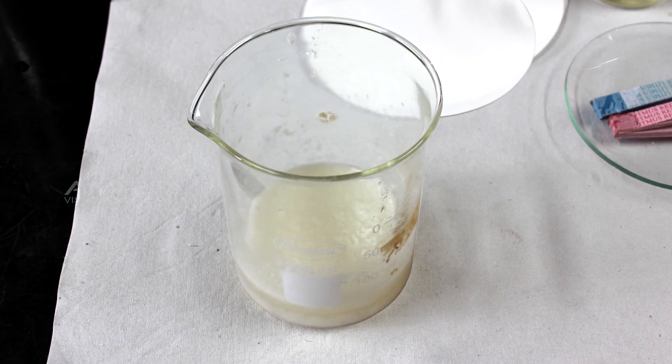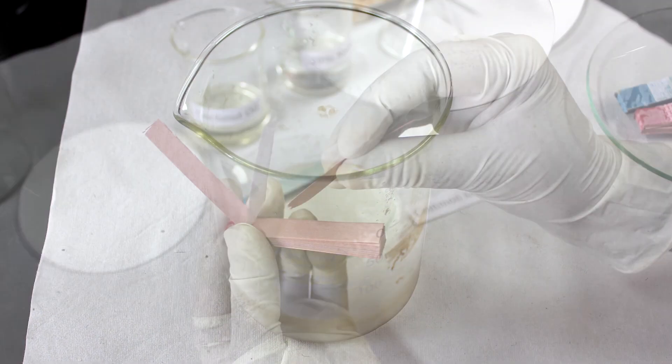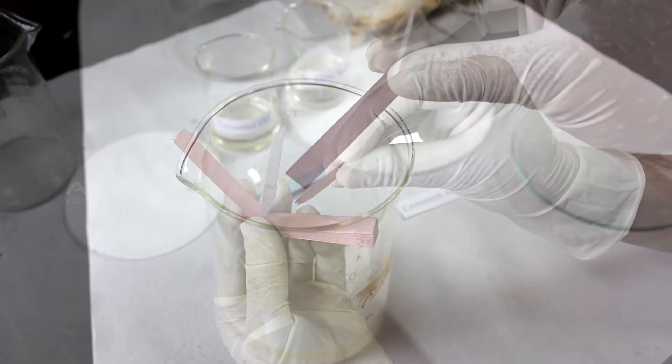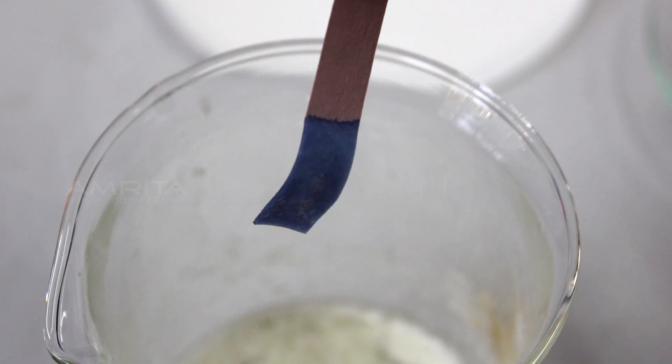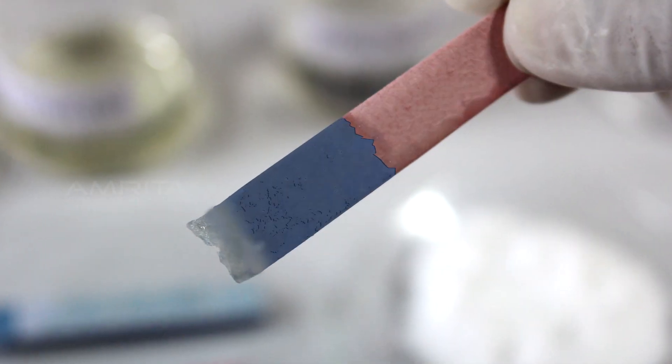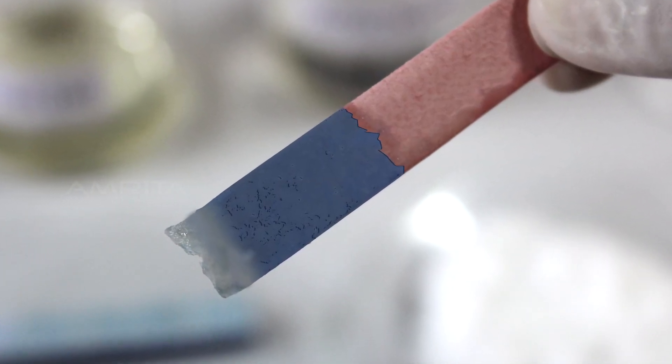Remove the beaker from the flame and allow it to cool. Take a red litmus paper and dip it in the suspension formed. Red litmus paper changes colour to blue indicating that soap suspension is basic in nature.